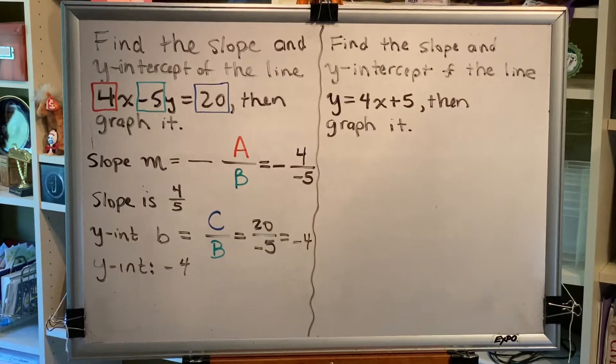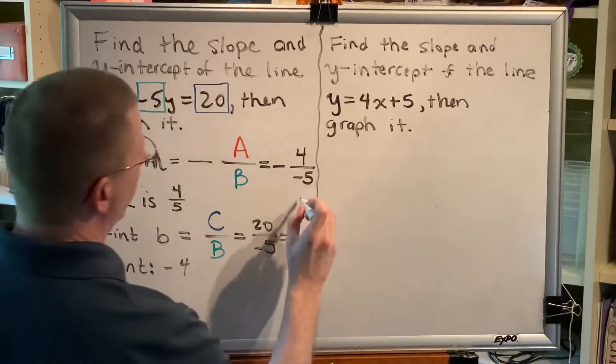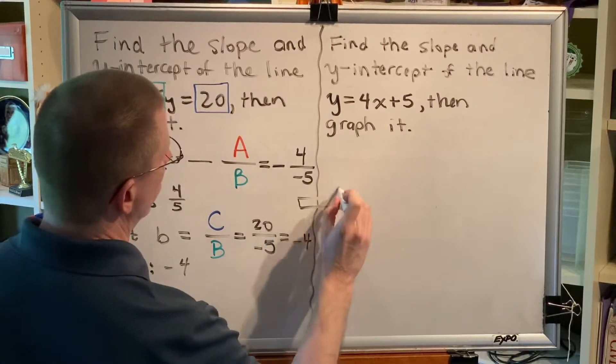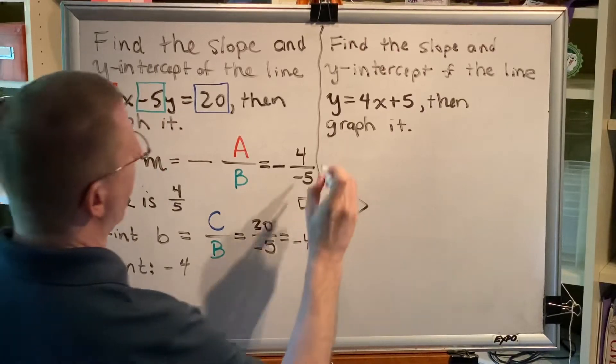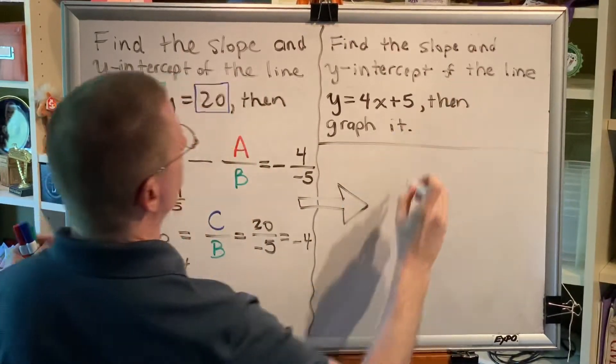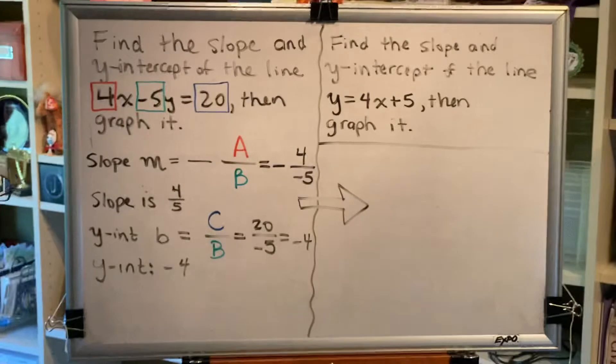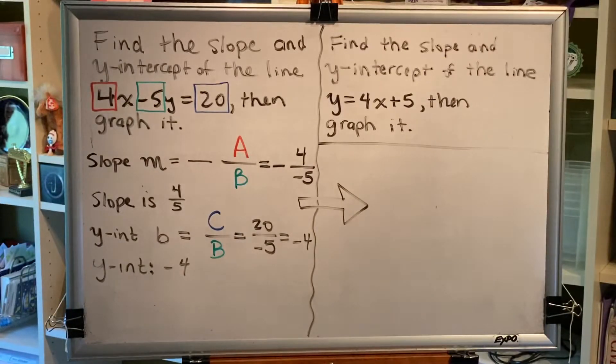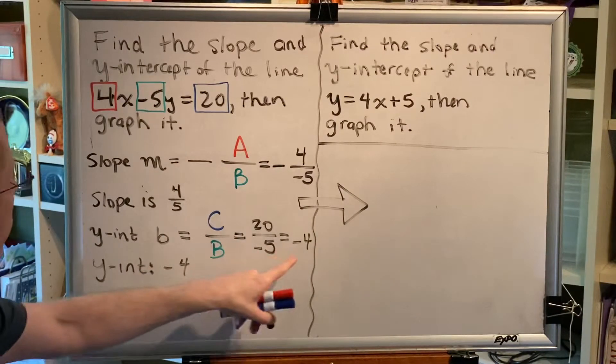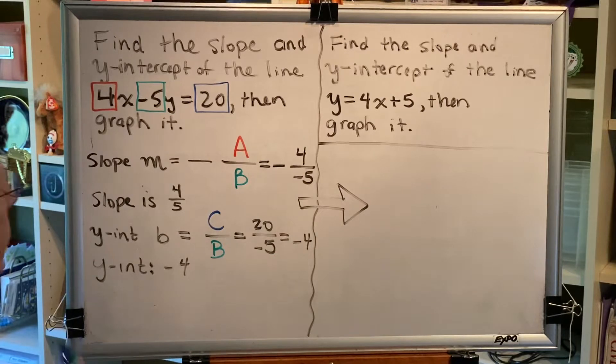Okay, we're now ready to make our graph. We're just going to temporarily borrow a little bit of space from this problem over here. We'll solve this problem in a moment. Alright, so we need to create the graph of a line with a slope of 4 fifths and a y-intercept of negative 4.